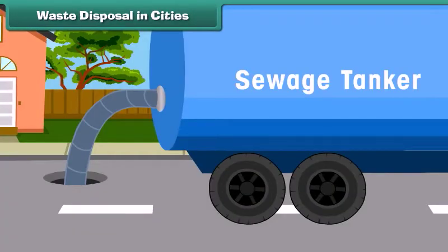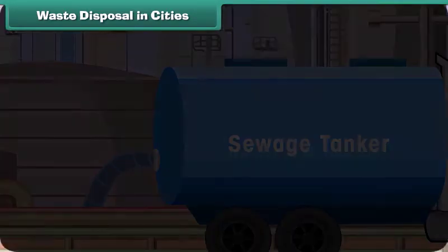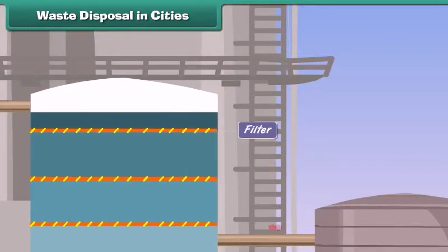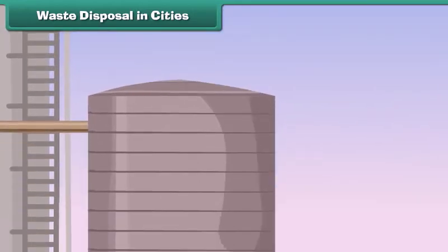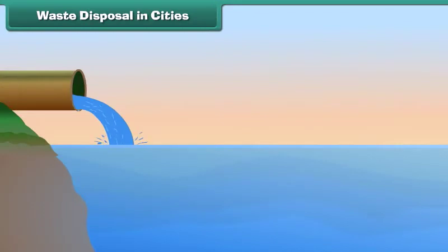Raw sewage collected from all over the city is first passed through a system of filters placed in machines. Filters help separate debris from heavy particles. The debris is then pumped into another tank where the remaining solid material settles down. This settled material is called sludge. The leftover liquid is drawn out, treated with chlorine to make it germ-free, and released into a river.